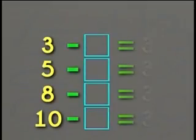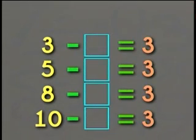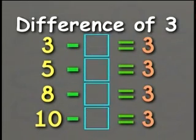Look at these number sentences. Can you find the pairs of numbers that have a difference of 3? In the first number sentence, what number must we take away from 3 to give us an answer of 3? Yes, 3 take away 0 gives us 3.